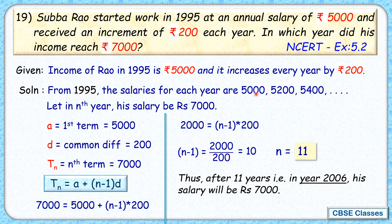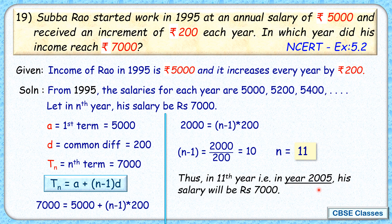In 1995 his earnings were Rs. 5,000 — that is the 1st term. So the 11th term is 10 years after 1995, not 11 years. There are 11 terms in total, but 1995 is already the starting term, so there are only 10 more years after 1995. Therefore his salary reaches Rs. 7,000 not in 2006 but in 2005. That is our answer.